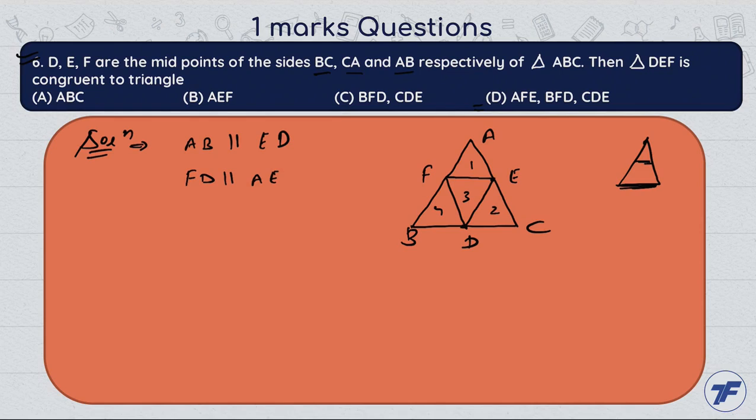If we have AB parallel to ED, then we can say that FAB is parallel. We have FED, so AE equal to FD.